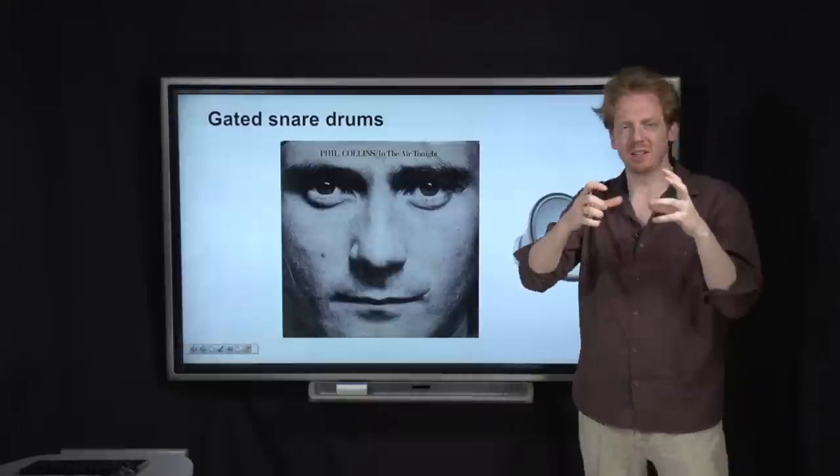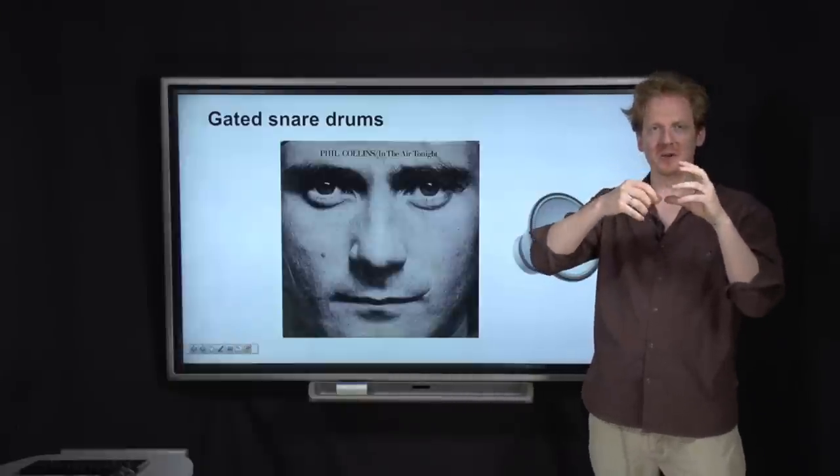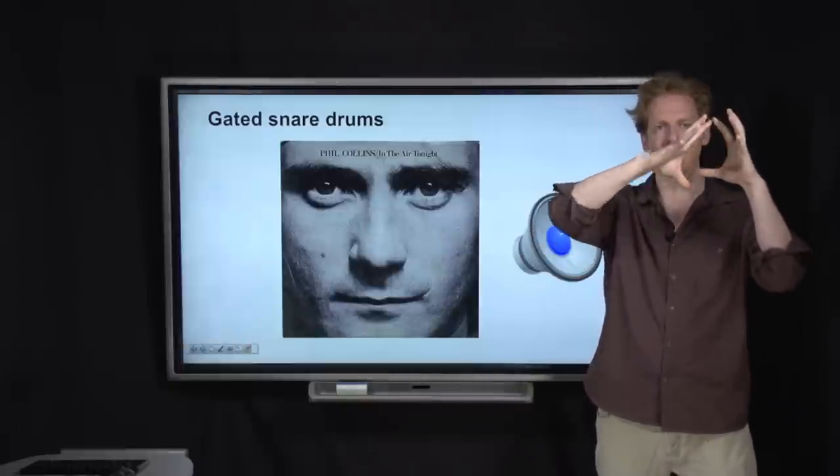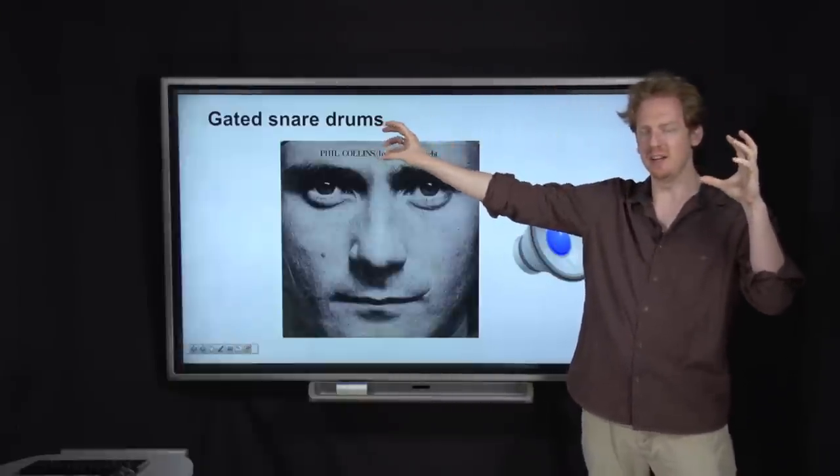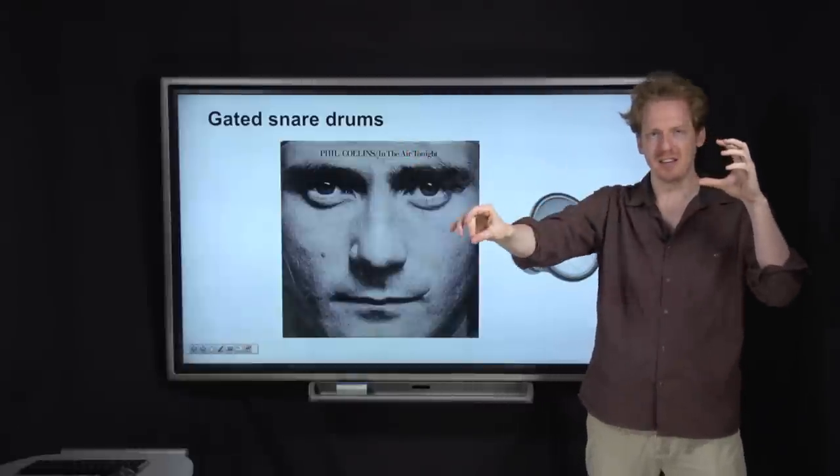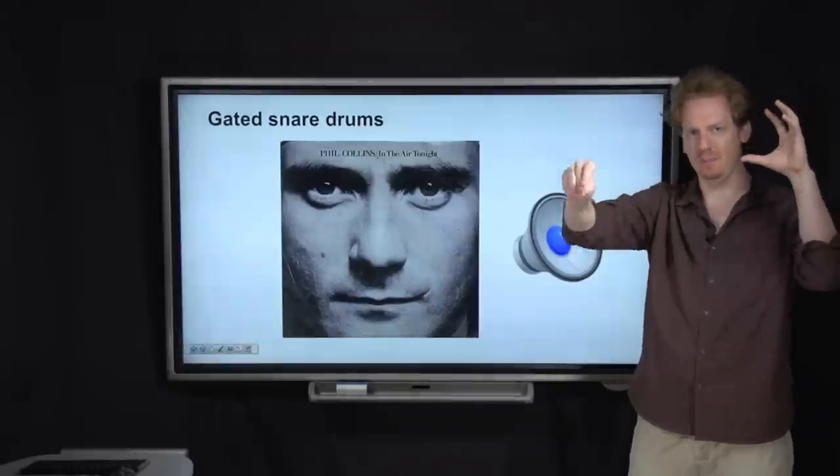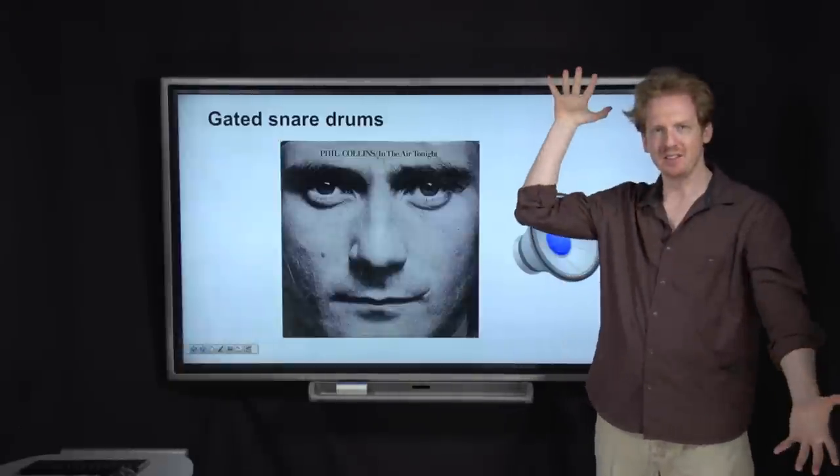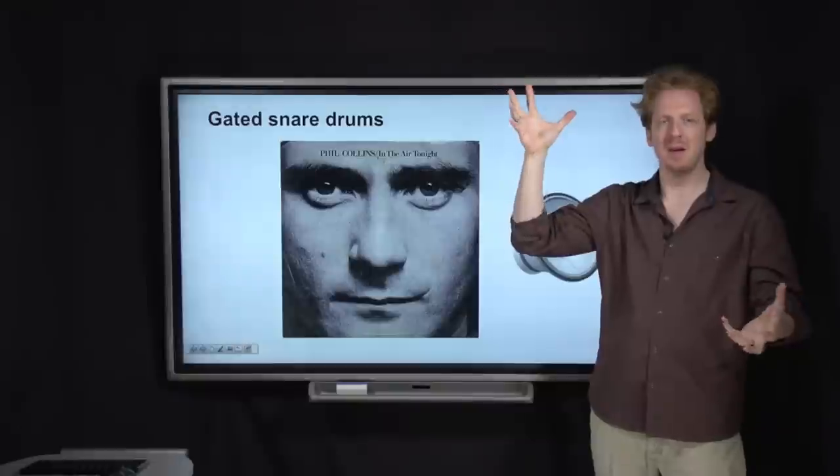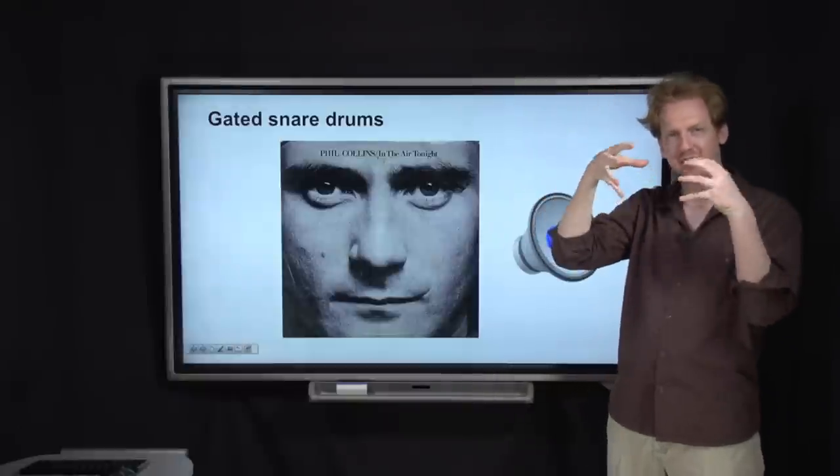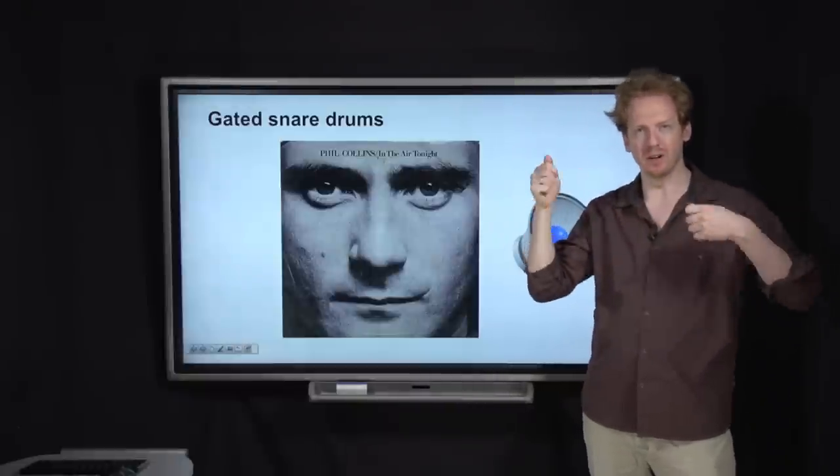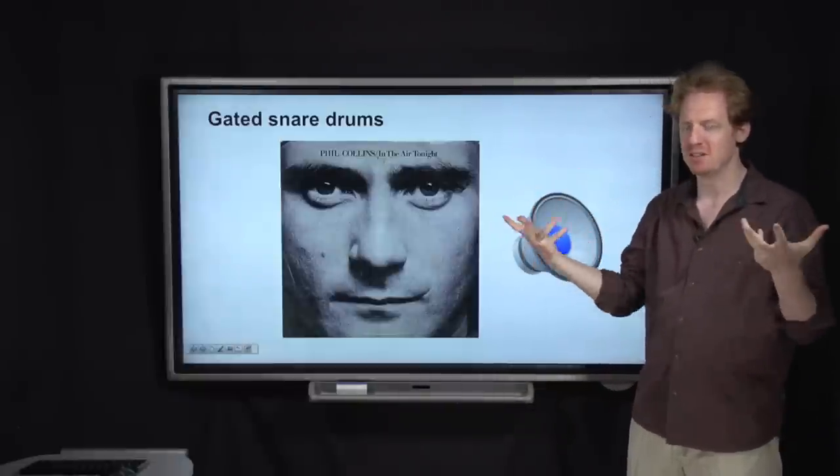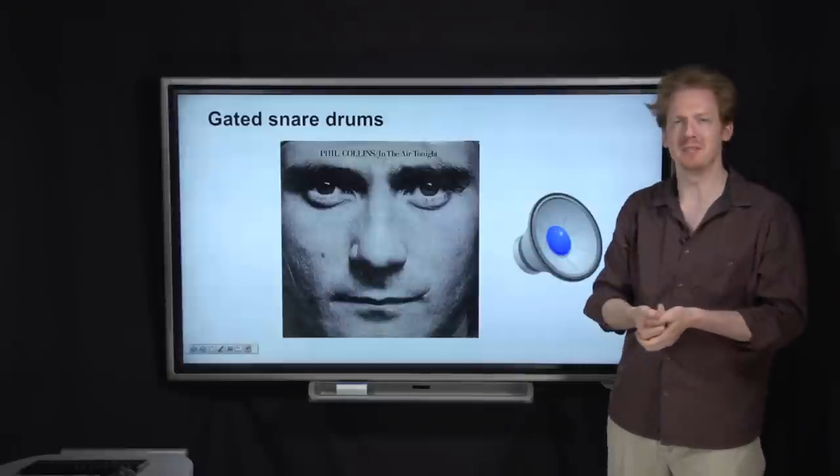And so what they found is if you take a snare drum with a lot of reverb on it, the sound is like this. Right? With this long tail. But if they put a gate on it, then it cuts the tail off pretty quickly. So you get like that. So you get that giant diffuse reverb sound, but you still have the kind of punchiness and attack that you want for a kind of driving beat. So gated reverb, the snare drum sound of the 80s.